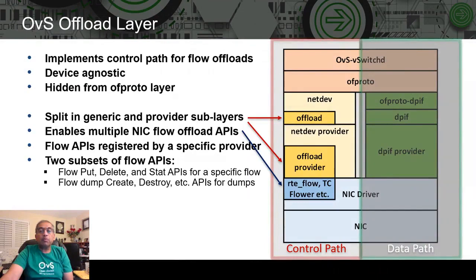The OVS community has been working on an OVS Offload solution for a while. We are now at a point where the OVS Offload layer design is in place. This is the control plane, below the OF proto layer, and it is device agnostic. It is divided into sub-layers, as you can see on the right-hand side of this slide. This architecture supports multiple flow offload APIs — OVS DPDK uses RTE flow for offloading, and OVS kernel data path uses TC flower.